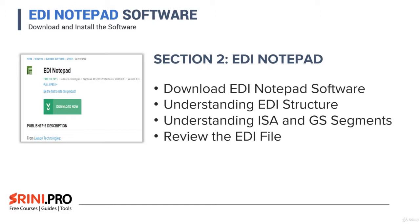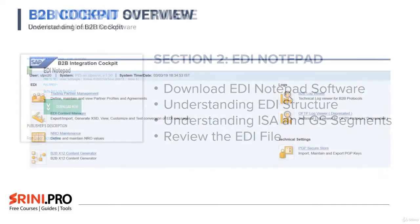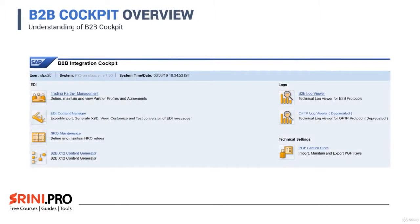Then we'll review the EDI file and add our own ISA and GS IDs into the file. In the next section, we will look at the B2B cockpit overview, wherein we will work with EDI Content Manager, where you will convert ANSI X12 messages to XML. Then we'll do some configuration in the NRO maintenance as well.